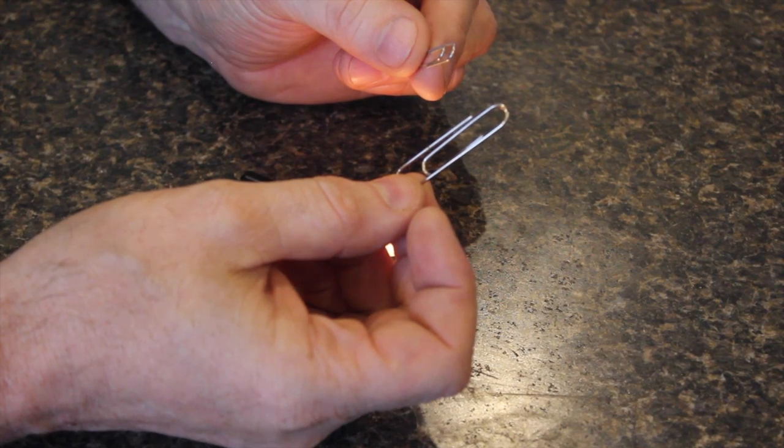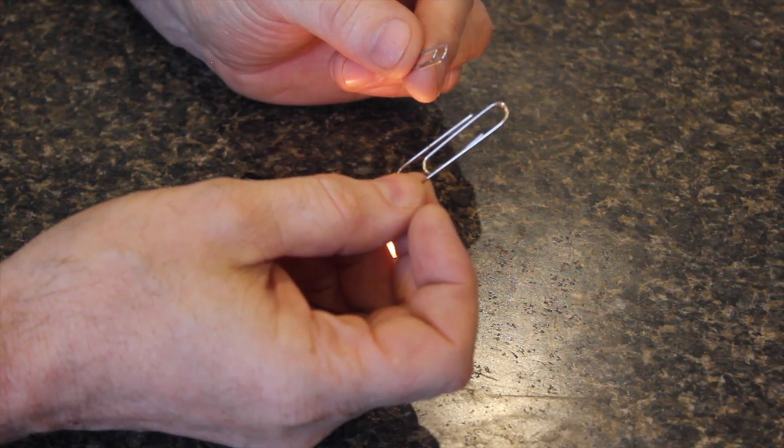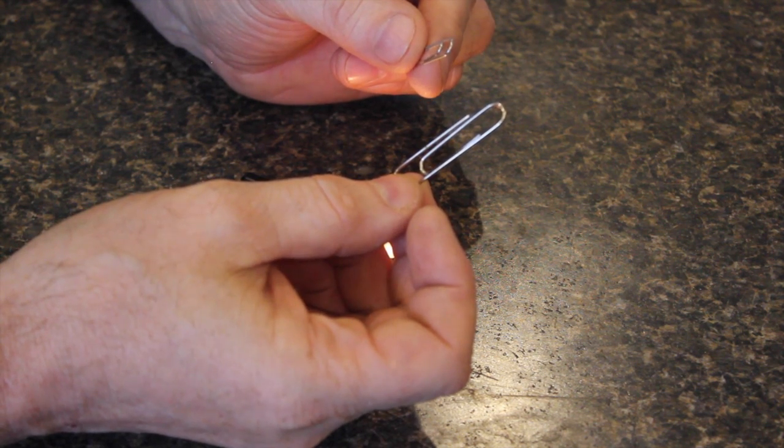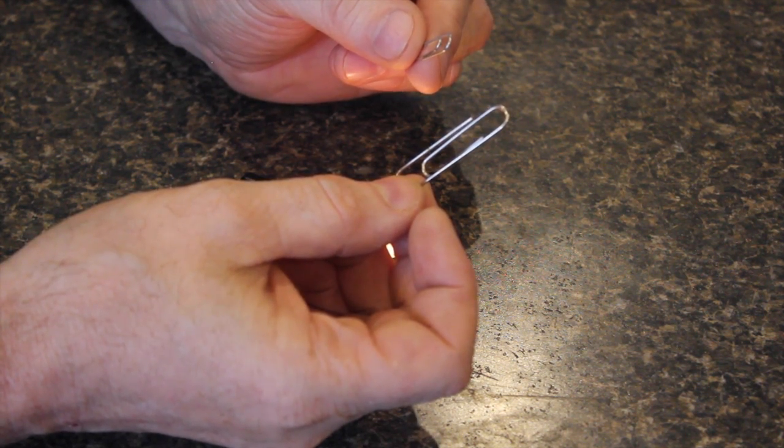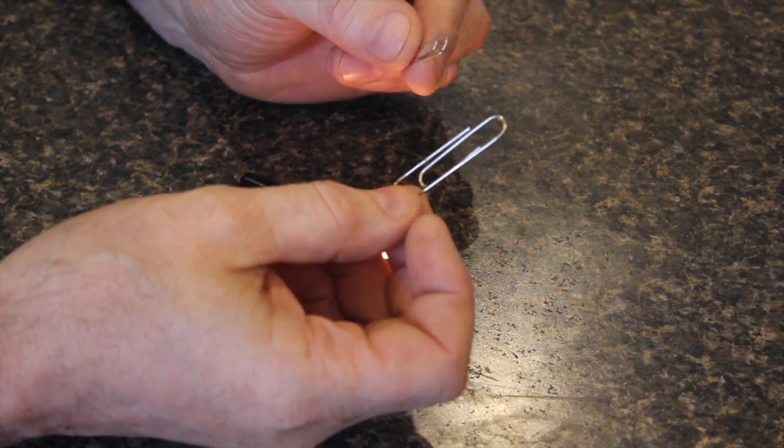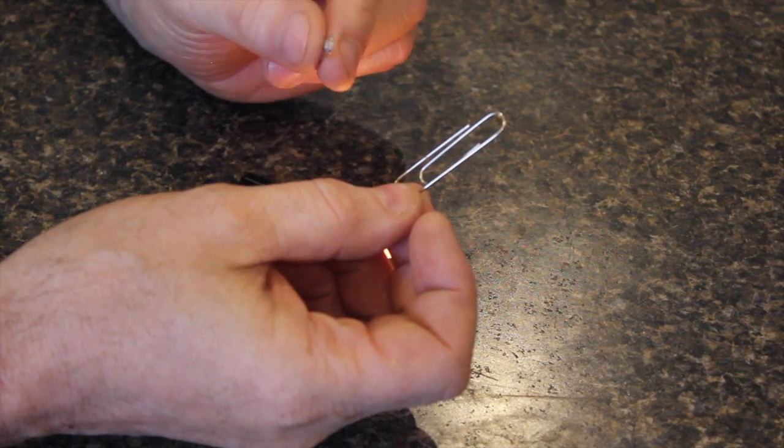I have found that paper clips actually work really good for structural integrity. So we've got large ones, we've got small ones, we're going to use the small one because the diameter fits what I'm trying to do a lot better.